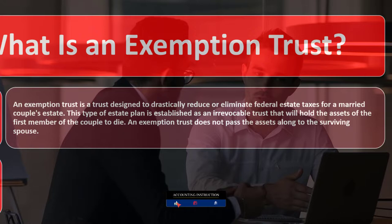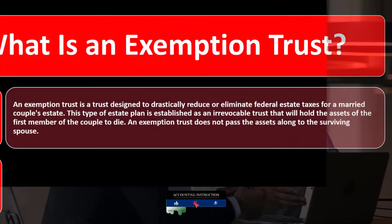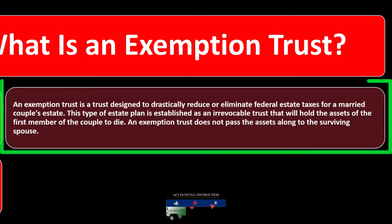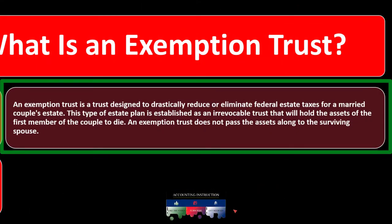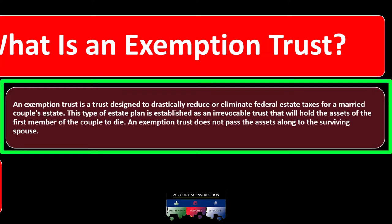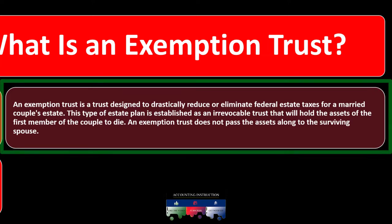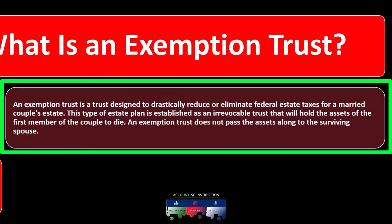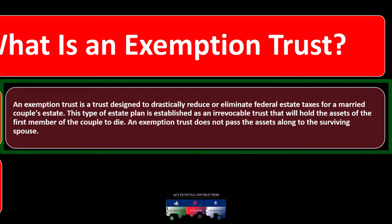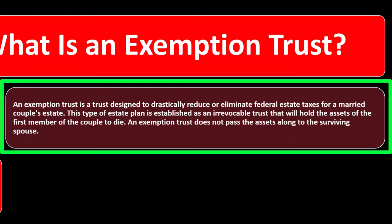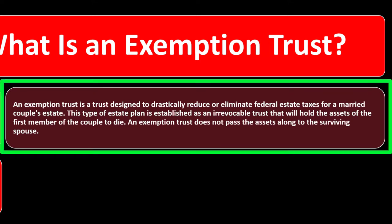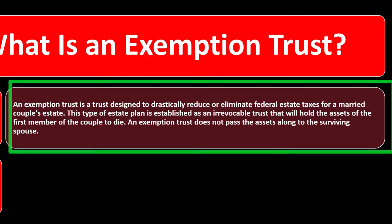There are also other strategies for more complex estate planning for higher-income individuals. This type of estate plan is established as an irrevocable trust — irrevocable as opposed to revocable — that will hold the assets of the first member of the couple to die. An exemption trust does not pass the assets along to the surviving spouse.